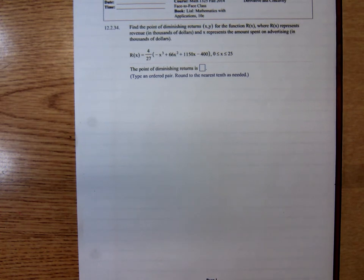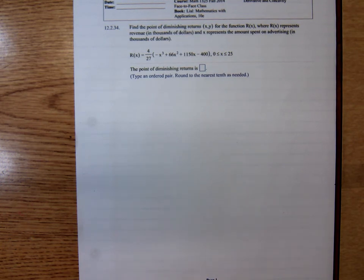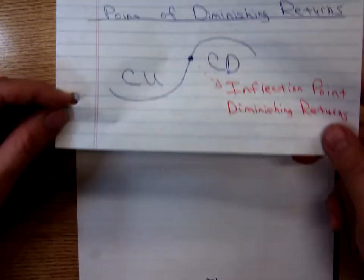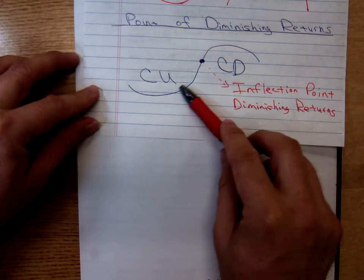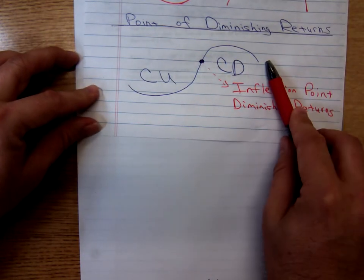Here's the problem: find the point of diminishing returns (x, y) for the function r(x), where r(x) represents the revenue in thousands of dollars and x represents the amount spent on advertising in thousands of dollars. They give us a revenue function and want us to find the point of diminishing returns. Keep in mind, just an inflection point does not necessarily mean a point of diminishing returns — it must occur when the graph changes from concave upward to concave downward.